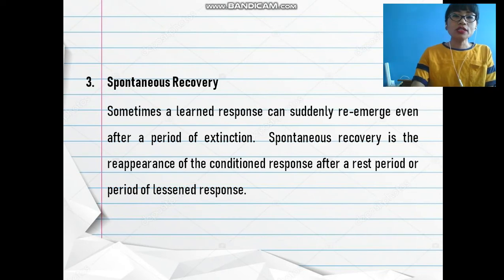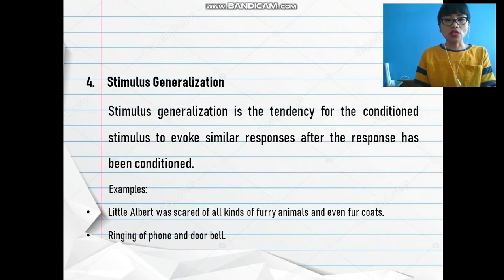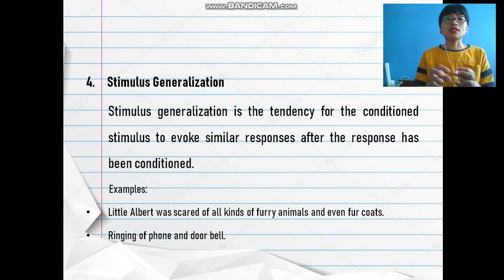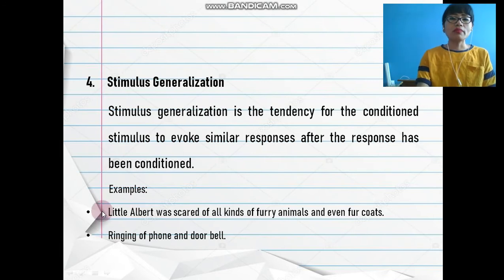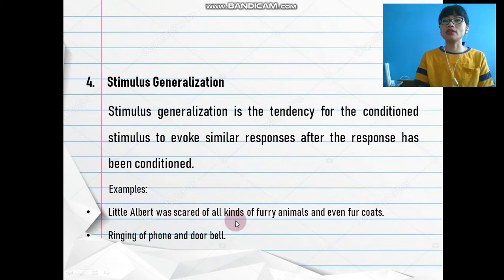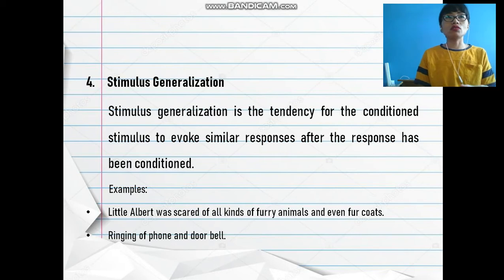Next we have stimulus generalization. This is like generalizing different stimuli as one stimulus — if the stimuli are similar, we generalize them. Going back to the experiment on Little Albert, he was made to fear all kinds of furry animals. First, he was made afraid of only rats.